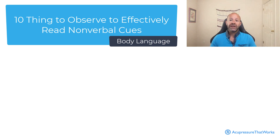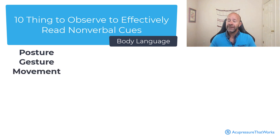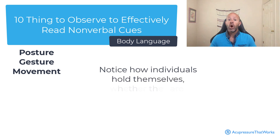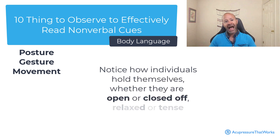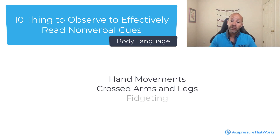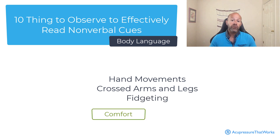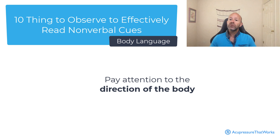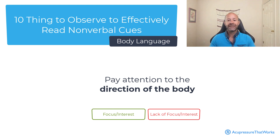Body language. The body conveys a wealth of information through its posture, gestures and movement. Notice how individuals hold themselves, whether they are open or closed off, relaxed or tense. Gestures such as hand movements, arms crossed, legs crossed, and fidgeting can reveal someone's level of comfort or discomfort. Pay attention to the direction of the body, as it can also indicate their focus or interest — or lack of, such as facing away.